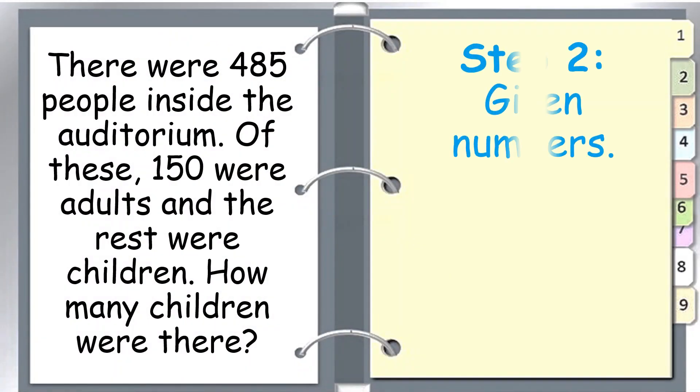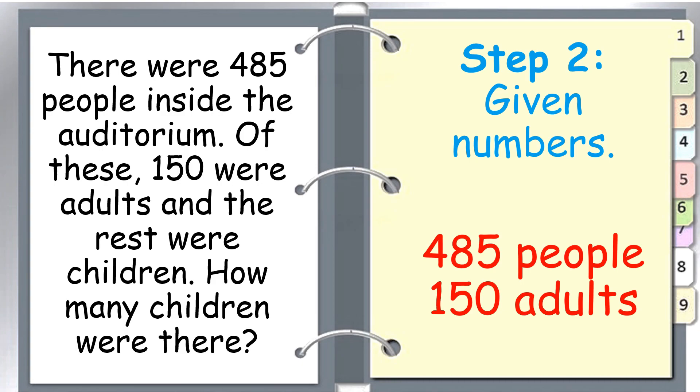Step number two is let us identify the given numbers, and that is 485 people and 150 adults. In this step, do not forget to put the label.